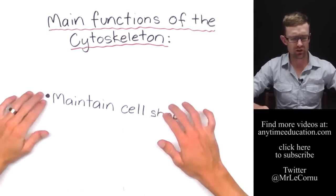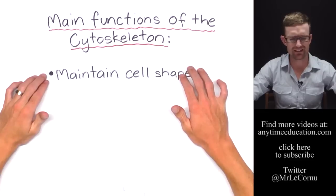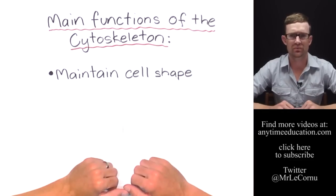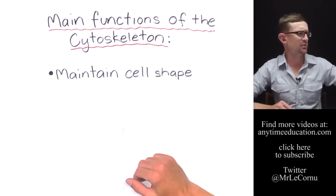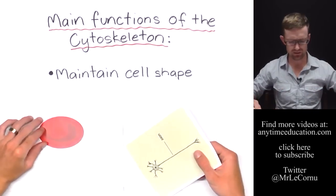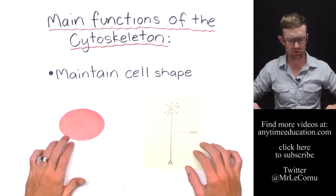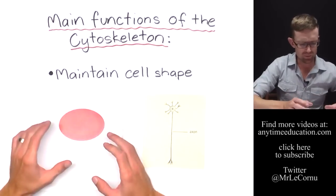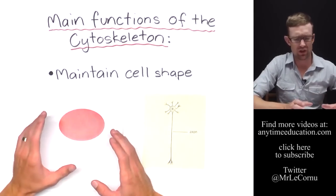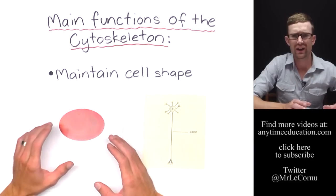The first function of the cytoskeleton is to maintain cell shape. Two specific examples I can give you are red blood cells and nerve cells. You might have come across these before.